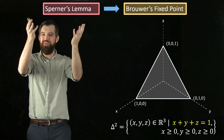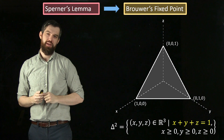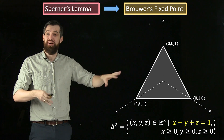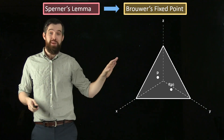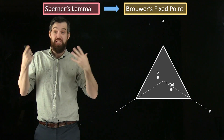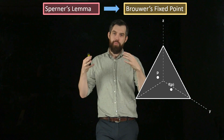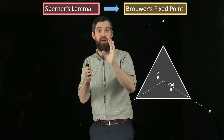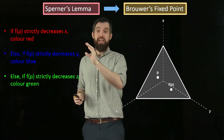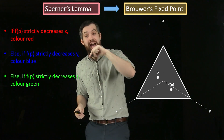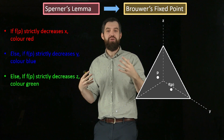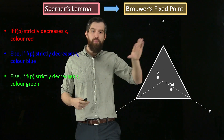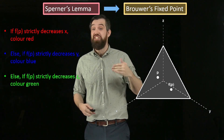How do I make Sperner's Lemma fit this context? Brouwer's fixed-point theorem looks at how I take points and transform them to other points. For some point p in the triangle, what is f(p)? I want to color-code all the points in this triangle by these rules: if f(p) strictly decreases in the x direction, color it red; if it strictly decreases in the y direction, color it blue; if it strictly decreases in the z direction, color it green.